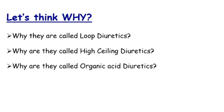Now let's think about why they have these names. They are called loop diuretics because they act on the loop of Henle — the name is based on their site of action. They are called high ceiling diuretics because they give the maximum effect as diuretics. And they are called organic acid diuretics because if you look at the chemical structure of furosemide or any other high ceiling diuretic carefully, you will see they have a carboxylic group attached to the main ring structure — so this name is based upon their chemical structure.